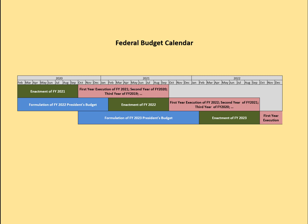The federal fiscal year runs from October 1st through September 30th. The budget is due from the executive branch to Congress by the first Monday in February of each year. So let's assume it's currently the end of February 2021. We would be wrapping up the fifth month of execution of the fiscal year 2021 budget.